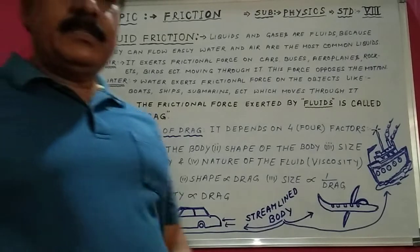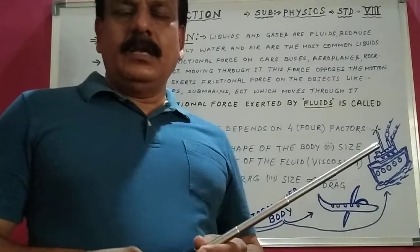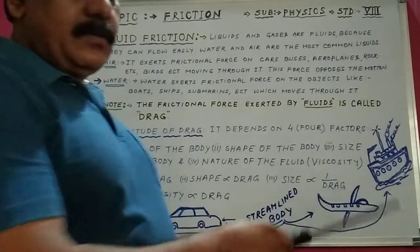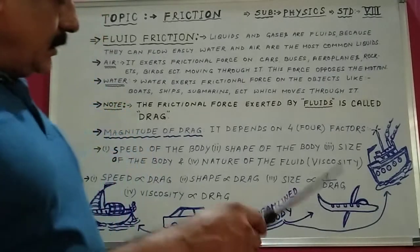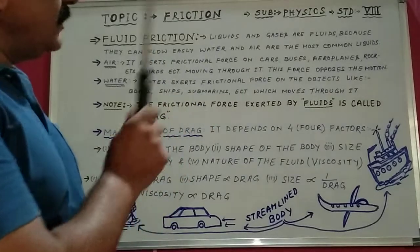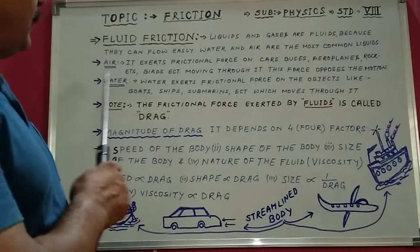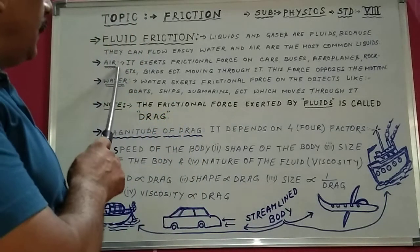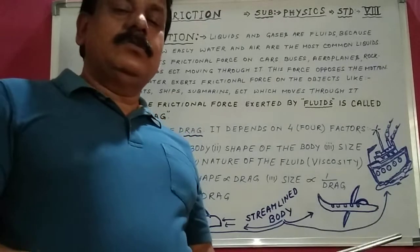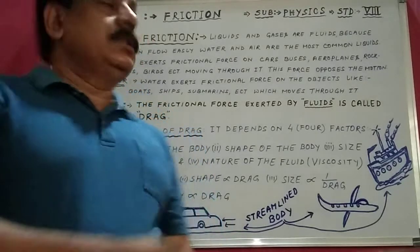Important questions coming: what is fluid friction, what is drag, what are the factors affecting drag, what is a streamlined body, and some figures and examples are required. Examples you can write: water boat, car, aeroplanes, ships, submarines, rockets — all have a streamlined body. Go through one more time: fluid friction is the friction exerted by liquids and gases. Drag is the frictional force exerted by fluids.